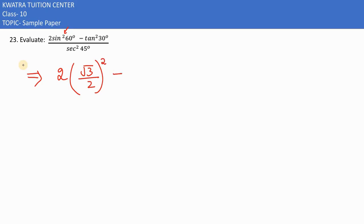Then you have tan square 30 degree. Now what is the value of tan 30? 1 by root 3 is there, and a whole square is there. Divided by secant square 45. Now what is the value of secant 45? Root 2. Square would be there.